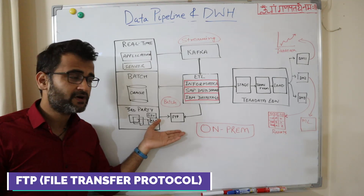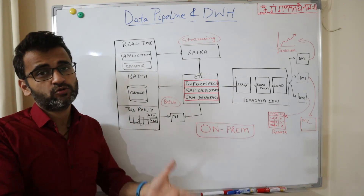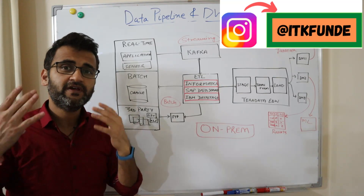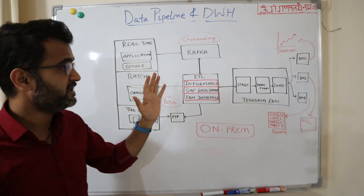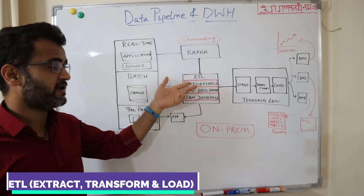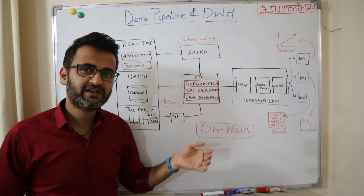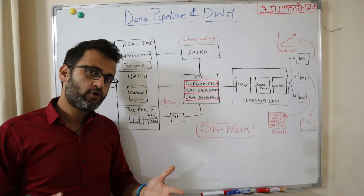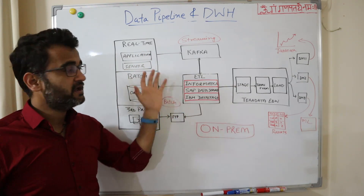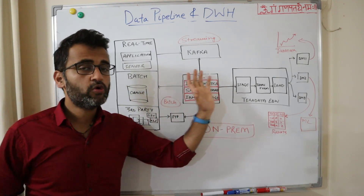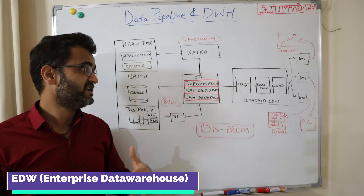Third-party files can be FTPed to an FTP server and then stored to be picked up. The technology that does the whole job of fetching and loading data is ETL — Extraction, Transformation, and Loading. ETL tools are plenty, but the three I have worked on are Informatica, SAP Data Services, and IBM DataStage. These ETL products play the crucial role of fetching data from the system — whether real-time or batch — and loading it into the enterprise data warehouse.